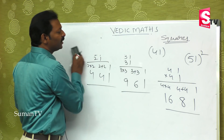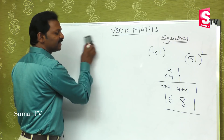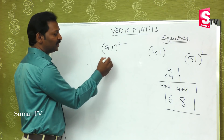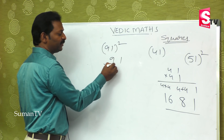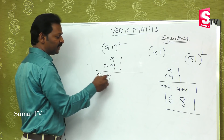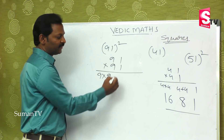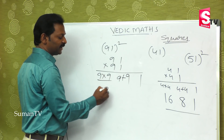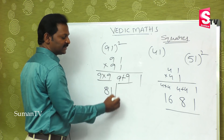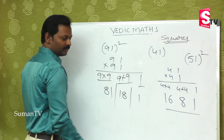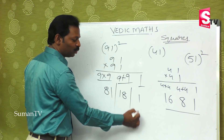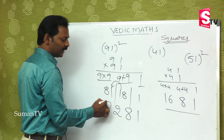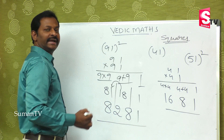Taking a bigger number like 91-square — that is 91 multiplied by 91. First nine into nine is eighty-one. Then nine plus nine is eighteen. Finally one. On balancing: eighty-one, eighteen, one — carry the one from eighteen to get one plus one equals two, so the answer is 8, 2, 8, 1 — that is eight thousand two hundred and eighty-one.